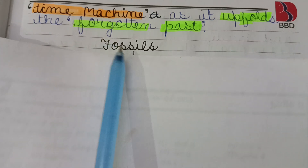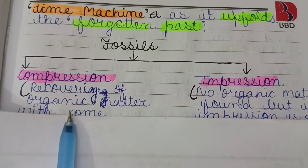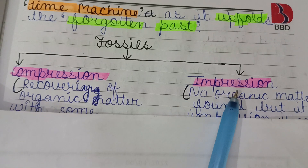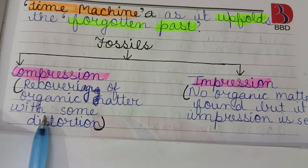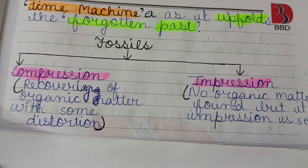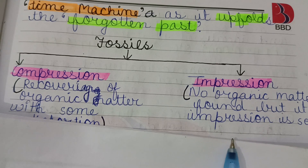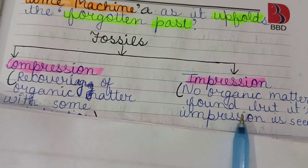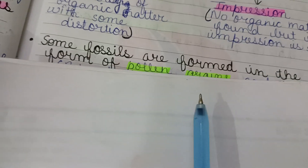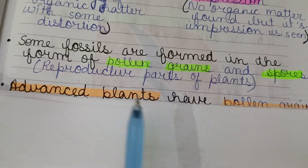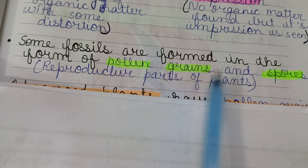Fossils are mainly found in two ways: first, in the form of compression, and second, in the form of impression. Compression means recovering of organic matter with some distortions. In impression form, no organic matter is found but its imprint is preserved. Some fossils are also formed in the form of pollen grains and spores.